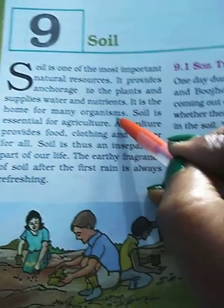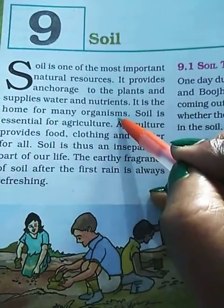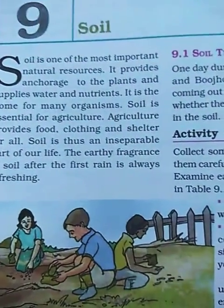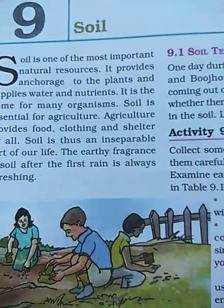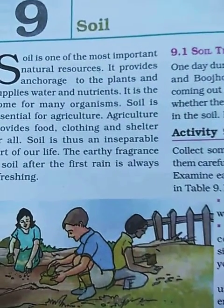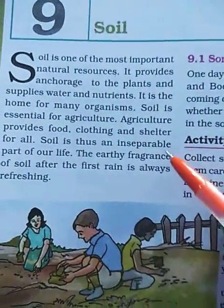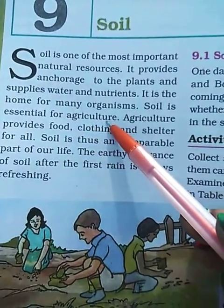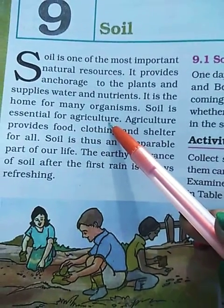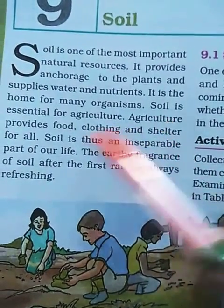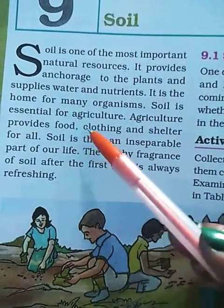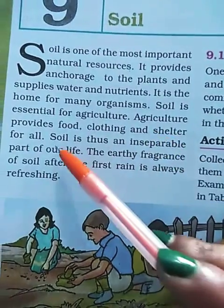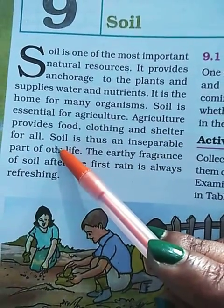We human beings build our houses on the soil, that is on the land itself. Soil is essential for agriculture. Agriculture provides food, clothing and shelter for all.